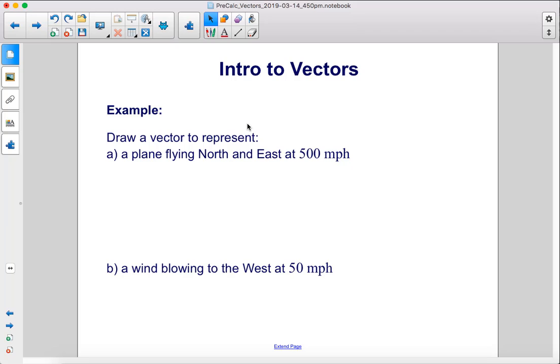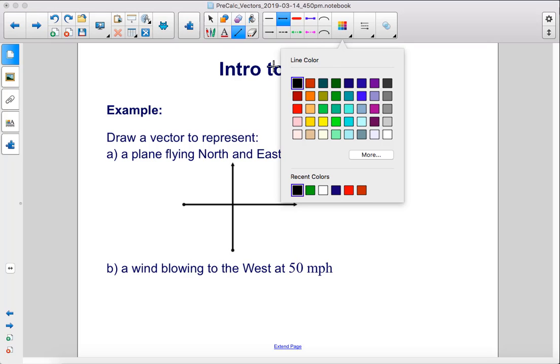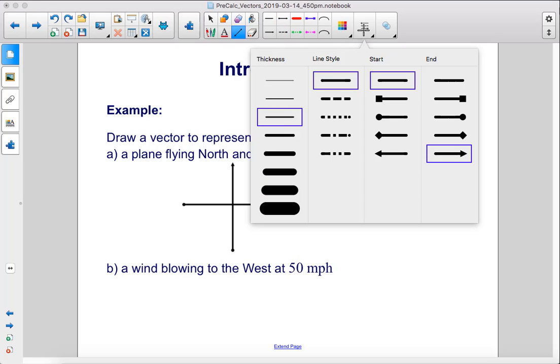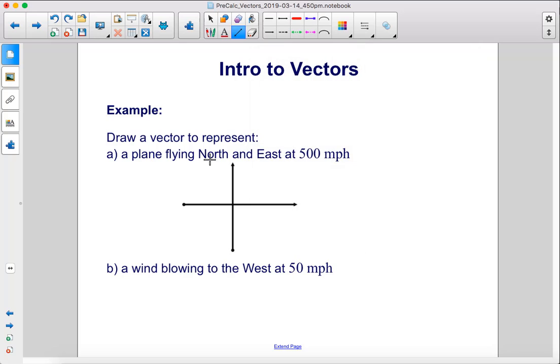Draw a vector to represent a plane flying north and east at 500 miles per hour. First, I'm going to draw north, and we have east going this way. So our vector will be red, north and east at 500 miles per hour. I'm going to start here and draw a line, so it's going northeast at 500 miles per hour.